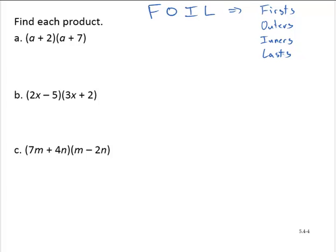So if I look at this first example, we have (a + 2)(a + 7). The firsts are a and a, and so then their product is a².